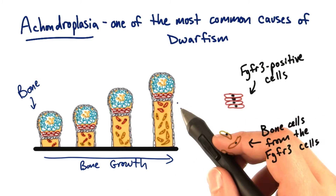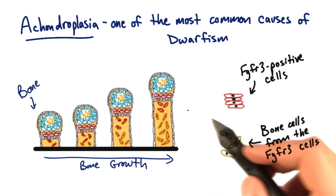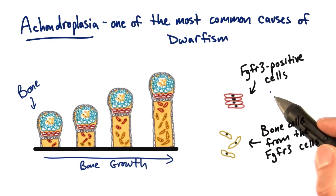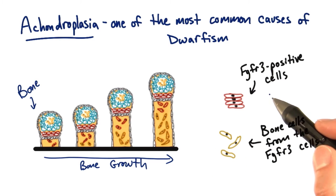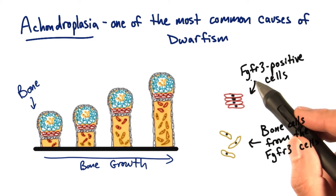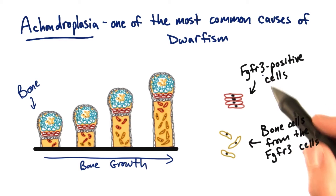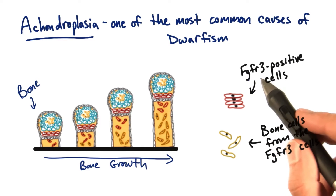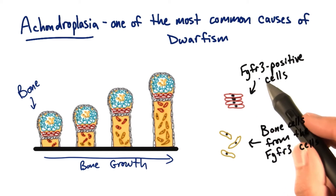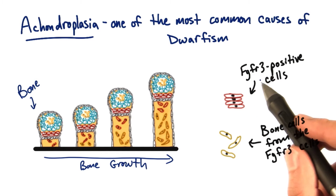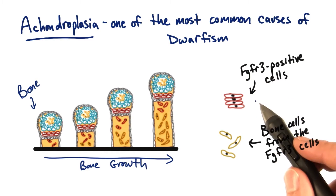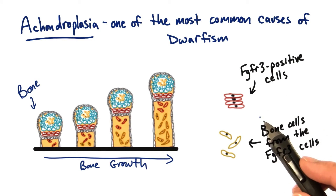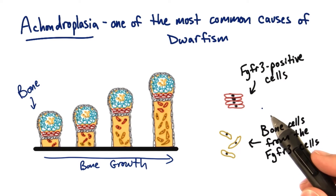Those red cells are red indicating that they have a particular important protein called FGFR3. It stands for fibroblast growth factor receptor 3, and we'll learn a bit more about it in a moment. But we'll just call it FGFR3 for now.